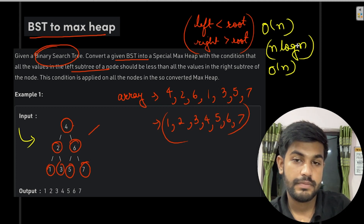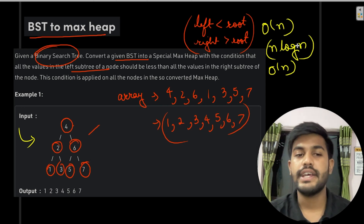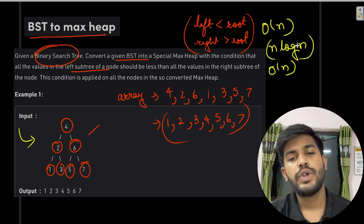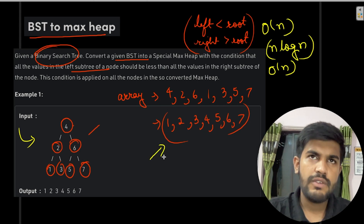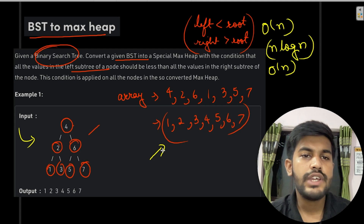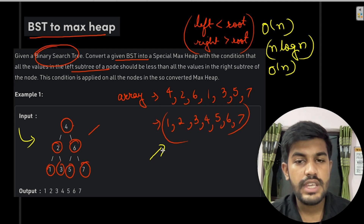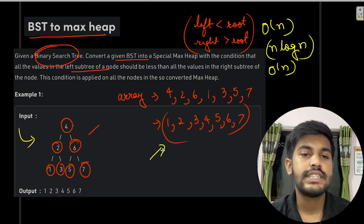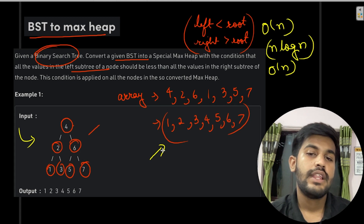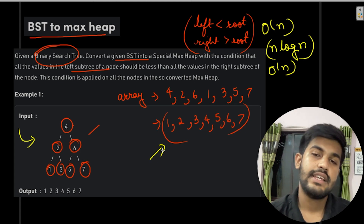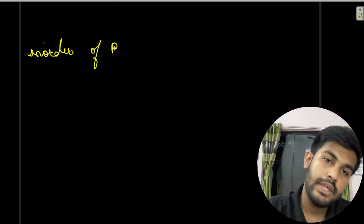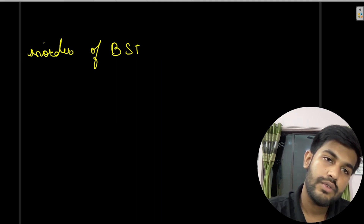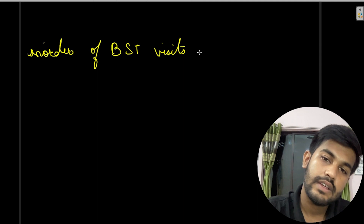Can we do better? Yes. The key intuition is: why are we given a BST instead of a simple binary tree? There is a very special property of a BST you need to remember when solving such problems — the in-order traversal of a BST visits nodes in sorted order.